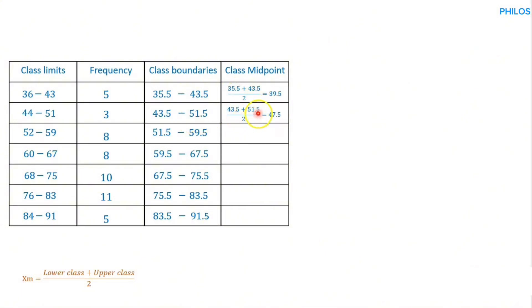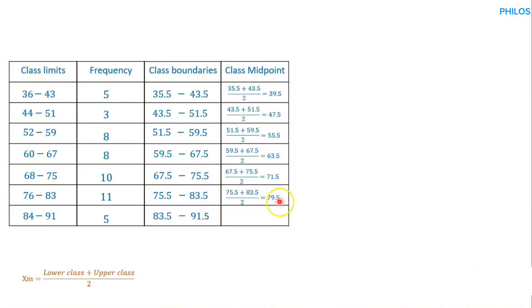For the second class: 43.5 plus 51.5 divided by two gives 47.5. The next: 51.5 plus 59.5 divided by two gives 55.5. Then 59.5 plus 67.5 divided by two gives 63.5. Then 67.5 plus 75.5 divided by two gives 71.5. Then 75.5 plus 83.5 divided by two gives 79.5. And the last: 83.5 plus 91.5 divided by two gives 87.5. You can also get the midpoint by adding the lower and upper class limits and dividing by two.